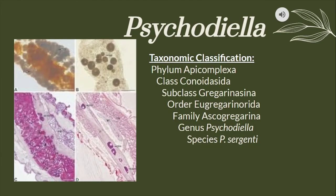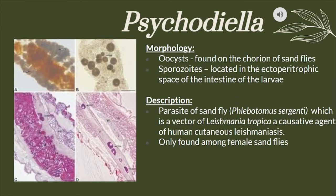The slide shows us the taxonomic classification for Psycodyella. Psycodyella oocysts are found on the chorion of sandflies, while sporozoites are located in the ectoperitrophic space of the intestine of the larvae. Psycodyella are parasites of Phlebotomus sergenti, which is a vector of Leishmania tropica, a causative agent of human cutaneous leishmaniasis, and they are only found among female sandflies.